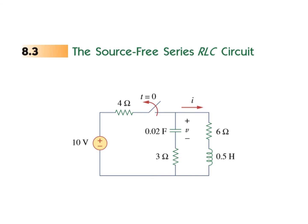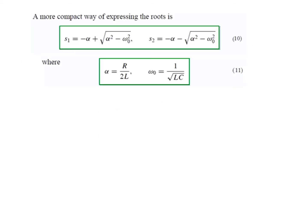Bismillahirrahmanirrahim. This is the second video on the series RLC circuit, and here we will be solving two problems. Let's revise. We have learned that S1 and S2 are the two roots of the characteristic equations, and the damping factor alpha is R over 2L, and the resonant frequency omega 0 is 1 over the square root of LC. If you have difficulty following, I would recommend that you check the previous video.